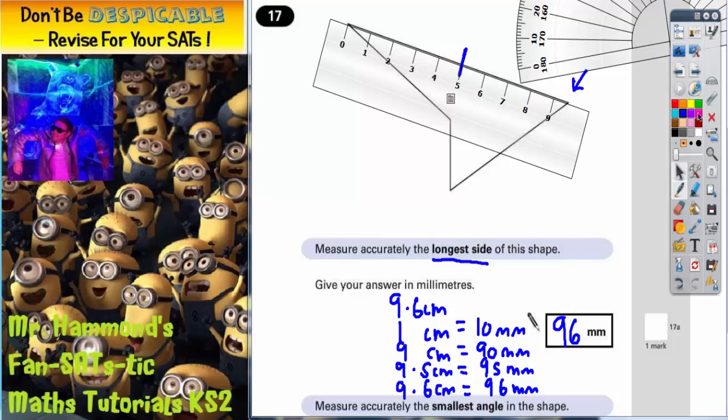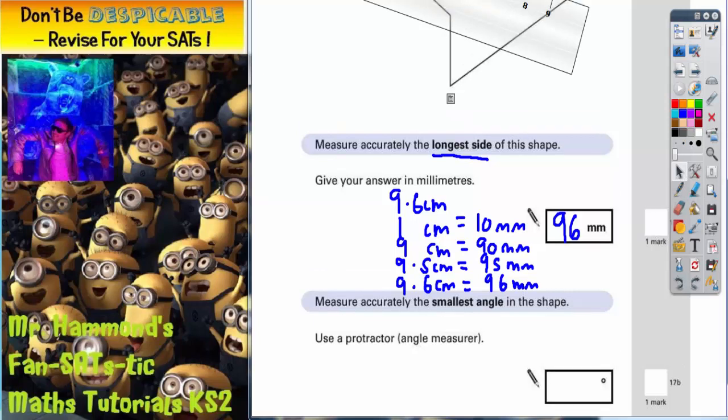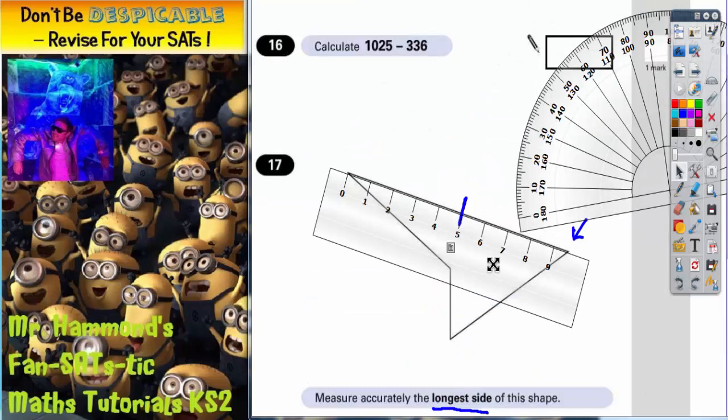Let's scroll down to the second part of the question. It then says measure accurately the smallest angle in the shape. Use a protractor, which is a posh word for an angle measurer. So, let's get the ruler out of the way, because we don't need that anymore.